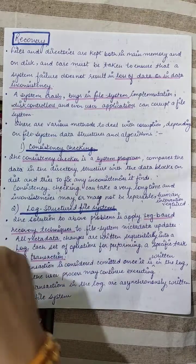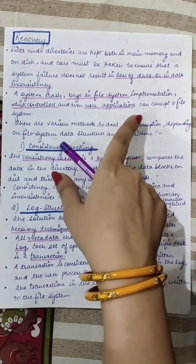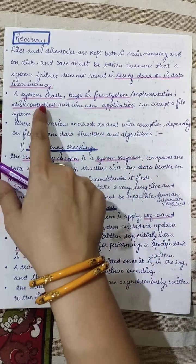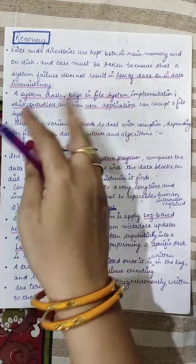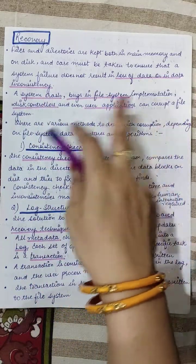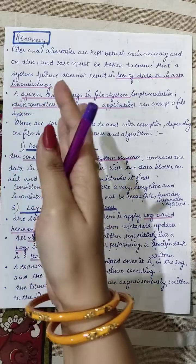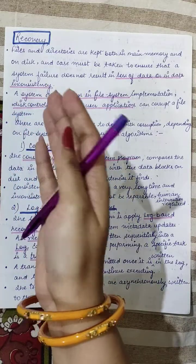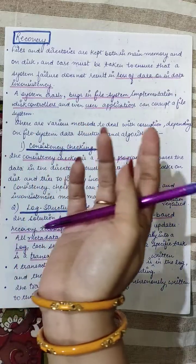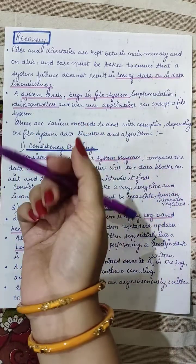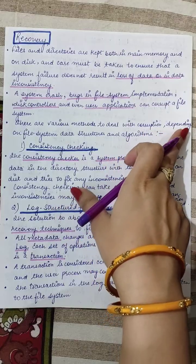A system can crash, there can be bugs in the file system implementation, something wrong with the disk controllers, or even user applications and programs can corrupt a file system. If such a crash happens, data may be lost. We want to be able to recover the data somehow, because we don't want to lose it. There are various methods to deal with corruption.